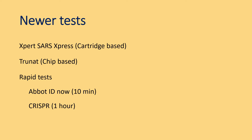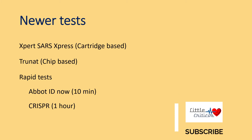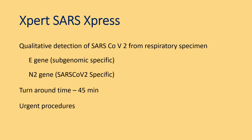Newer tests include the Xpert SARS-express, which is a cartridge-based test, TrueNat, which is a chip-based test, and other rapid tests like Abbott ID NOW and CRISPR-based assays. Xpert SARS-express is a nucleic acid amplification test for qualitative detection of SARS-CoV-2 from respiratory specimens; the E-gene and N-gene are usually targeted. The turnaround time is 45 minutes and it is generally used where urgent procedures are planned and RT-PCR results cannot be awaited.